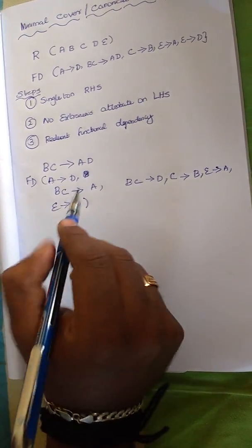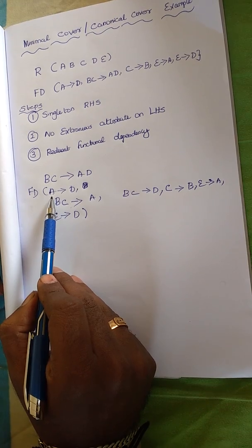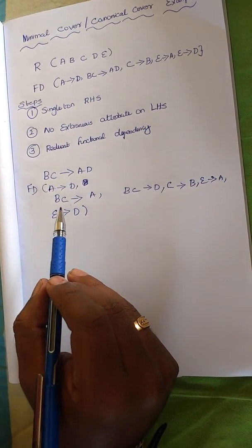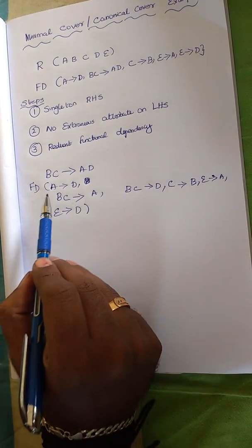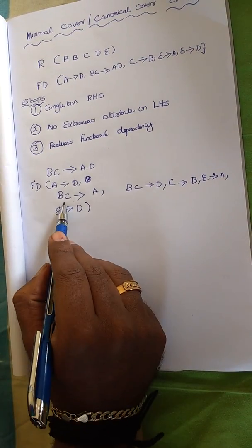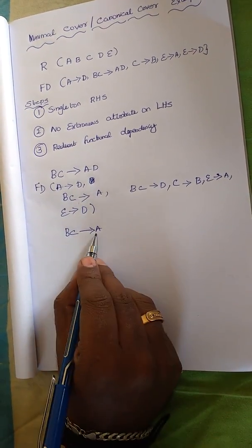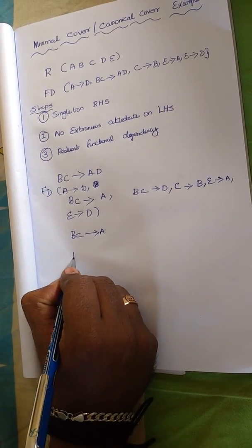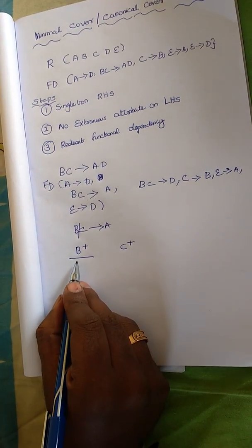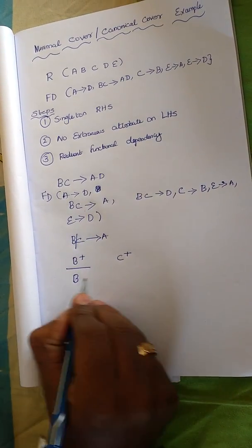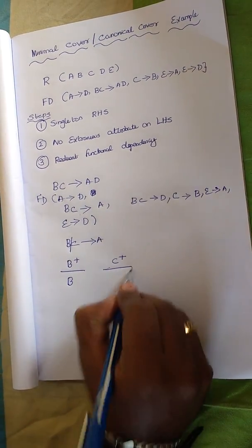Now we check the second step. We scan the modified functional dependencies for extraneous attributes on the left-hand side — we need more than one attribute on the left for this to apply. Consider BC determines A and BC determines D. We need to find the B closure and C closure. As per the reflexivity rule, B closure gives B. Scanning, B is not determining anything else, so B closure gives only B.